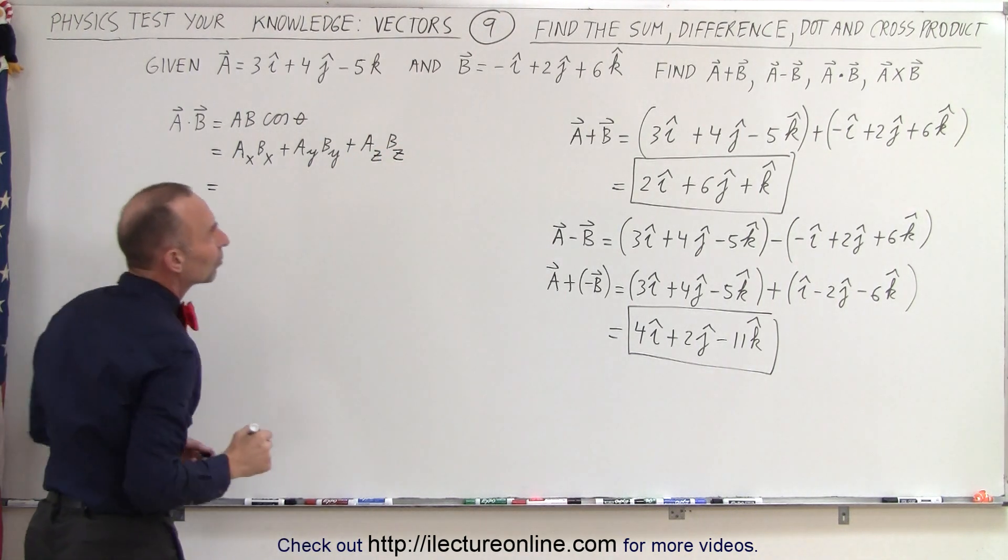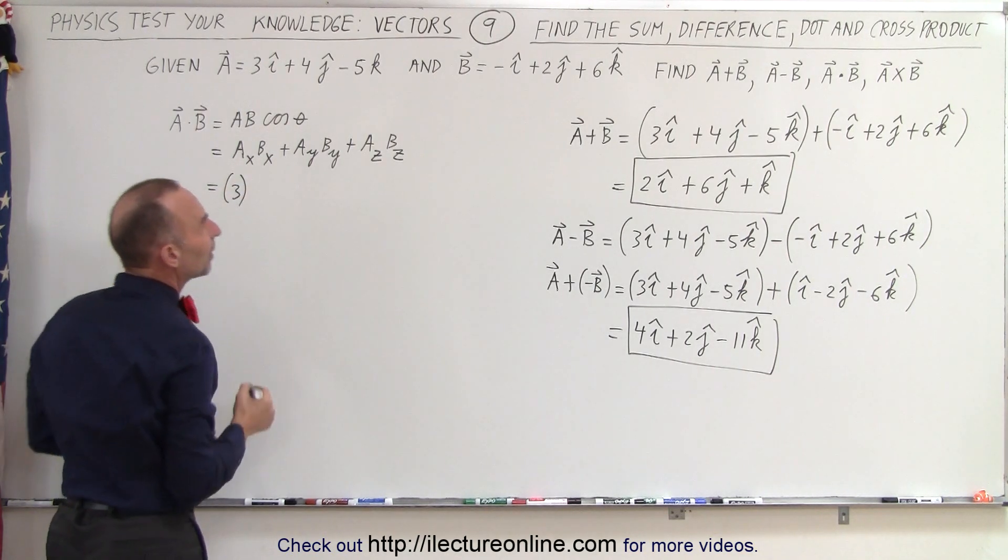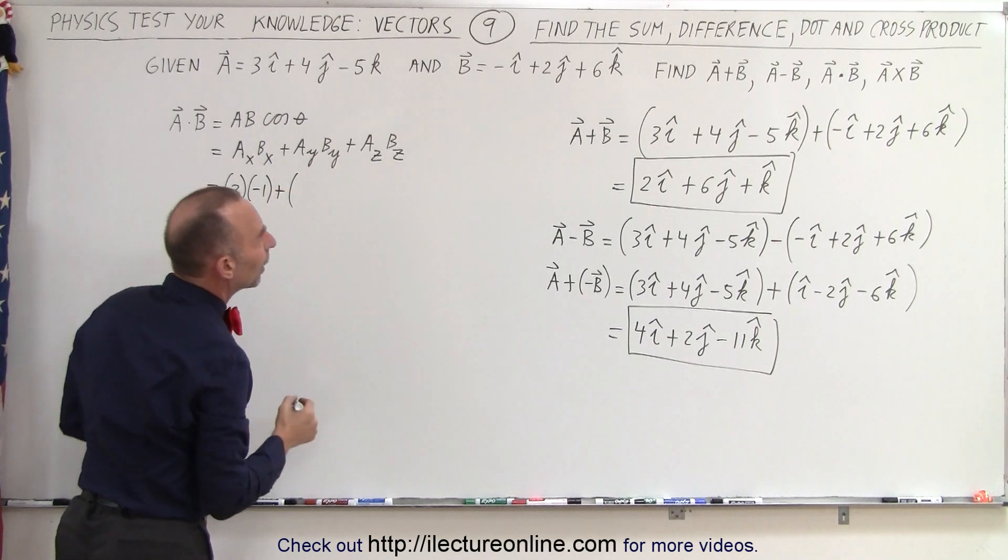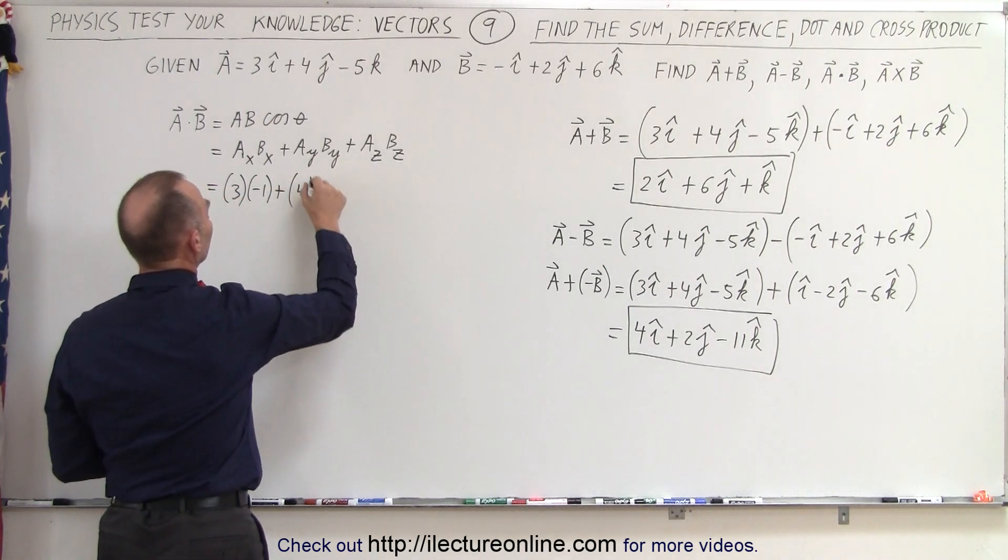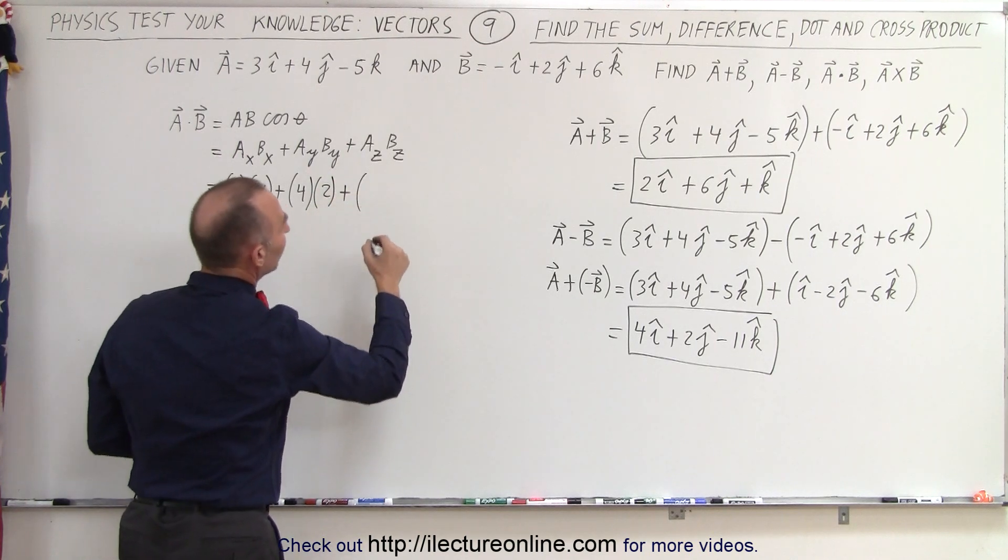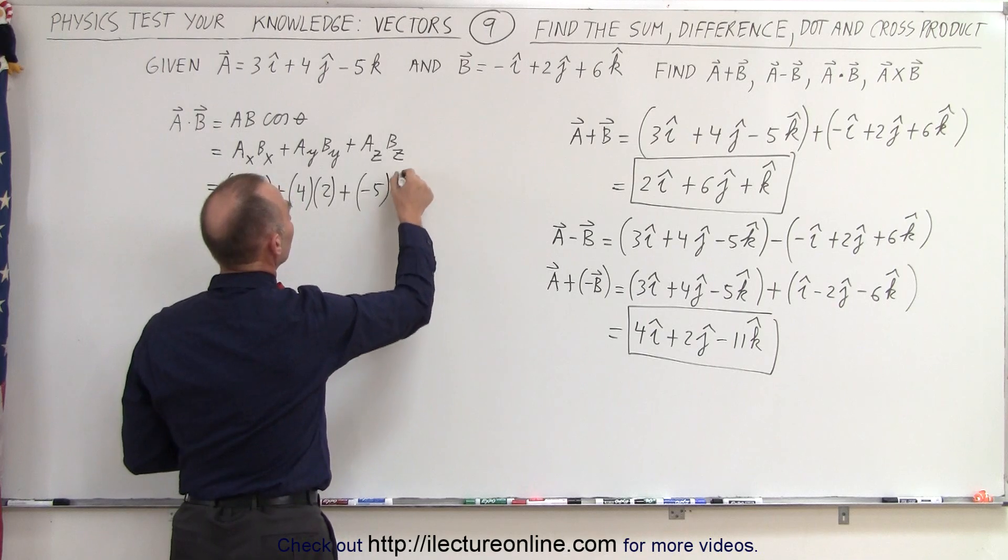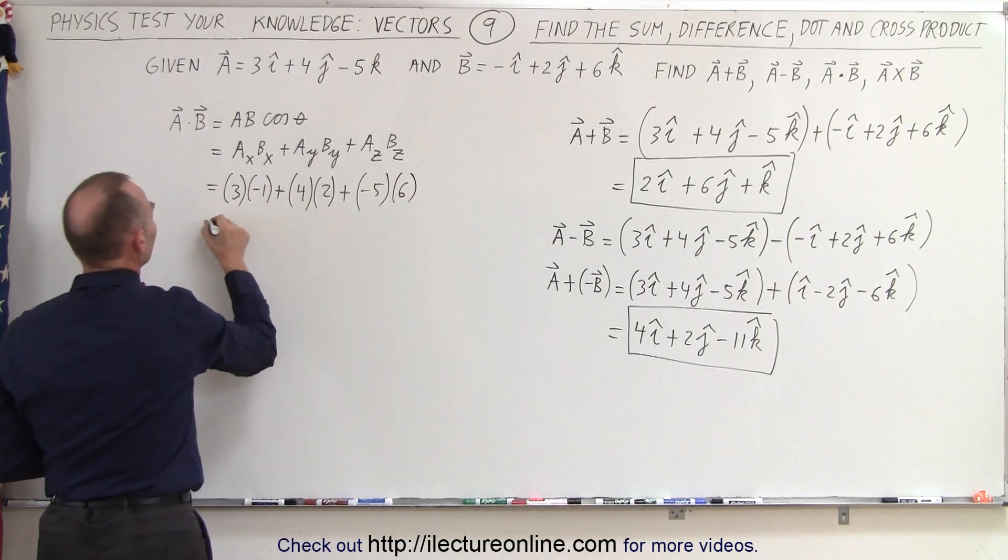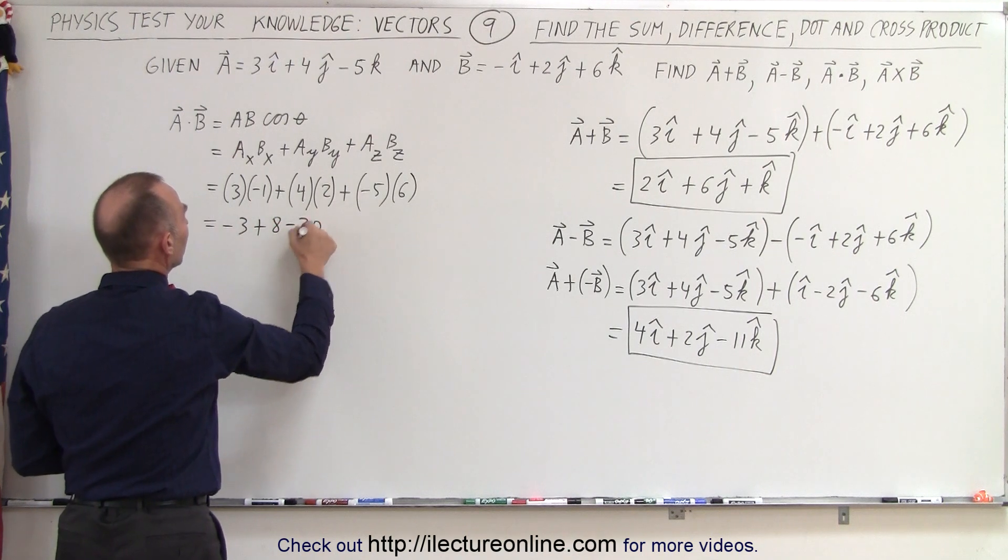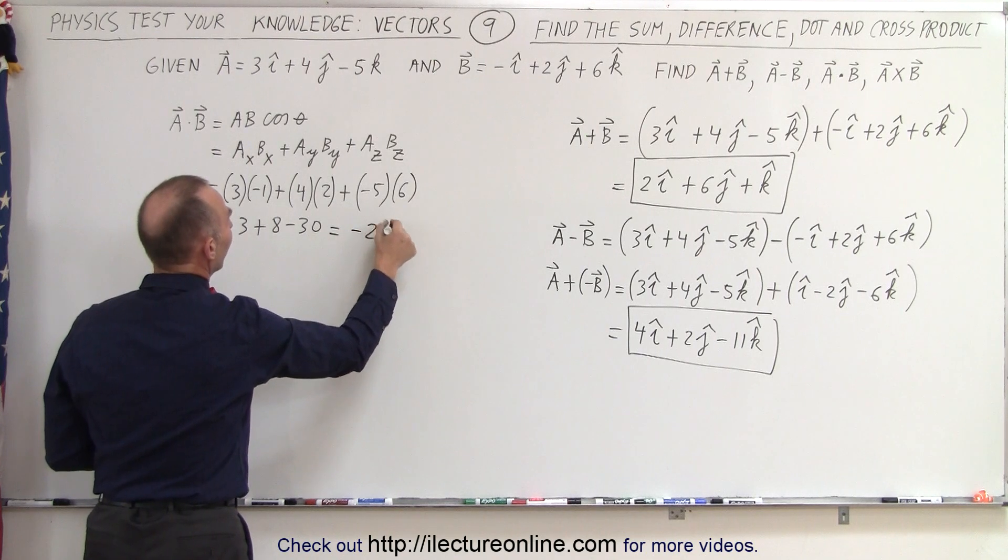So, let's go ahead and do that. So, a sub x, that would be 3 multiplied times b sub x, which is negative 1, plus a sub y, which is 4, times b sub y, which is 2, and plus a sub z, which is a minus 5, and multiplied times b sub z, which is 6. So, this is equal to negative 3 plus 8 minus 30. That would be minus 33 plus 8. That would be equal to minus 25.